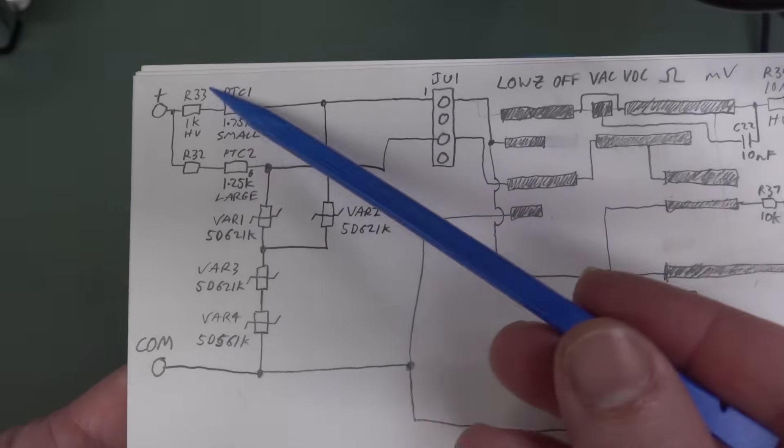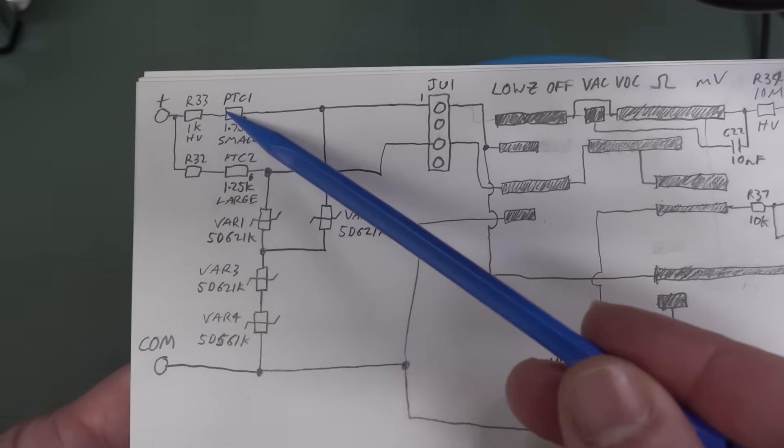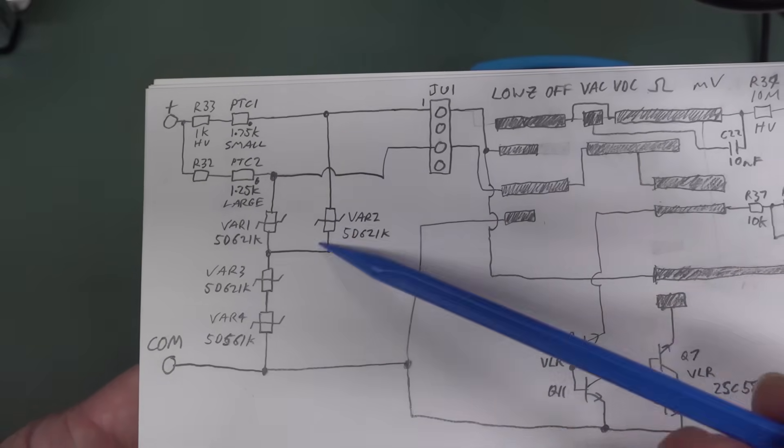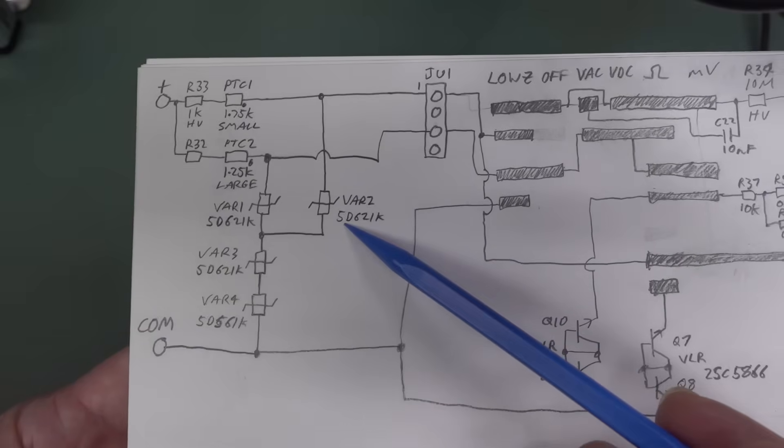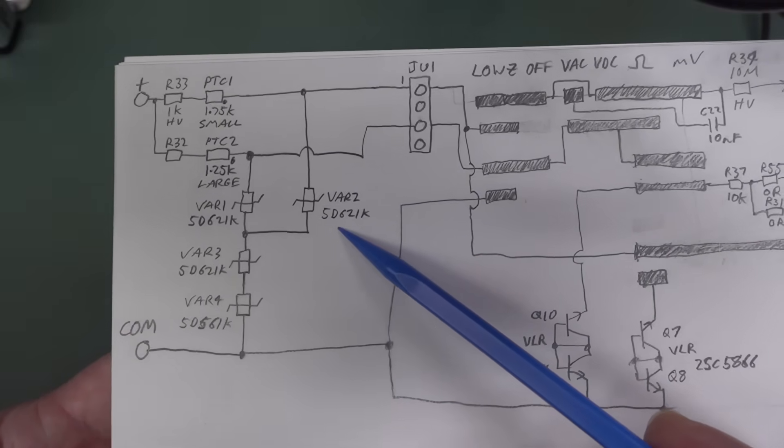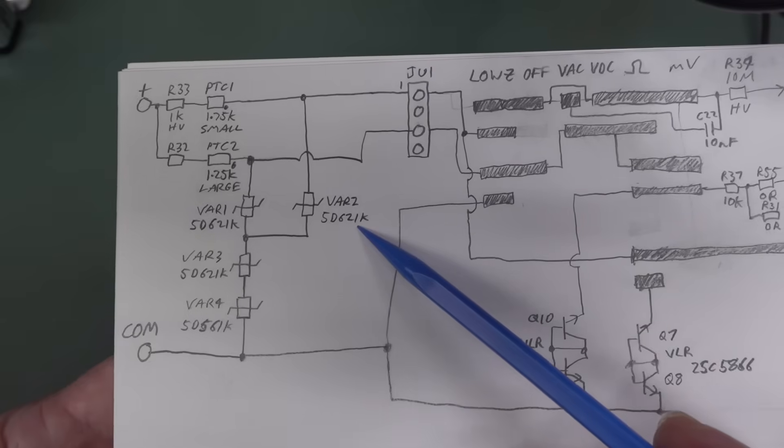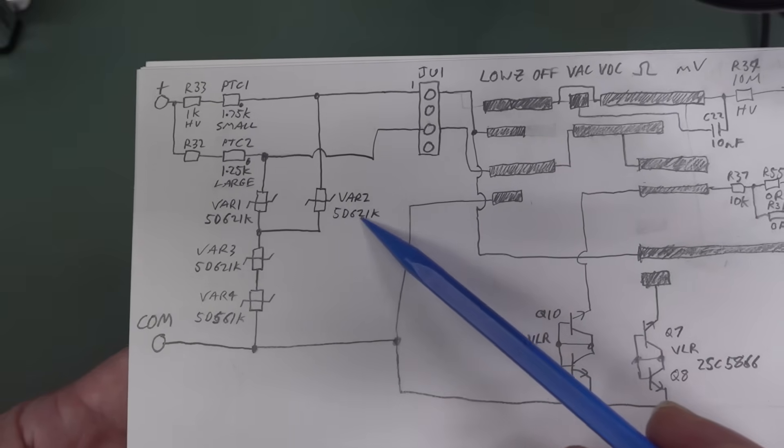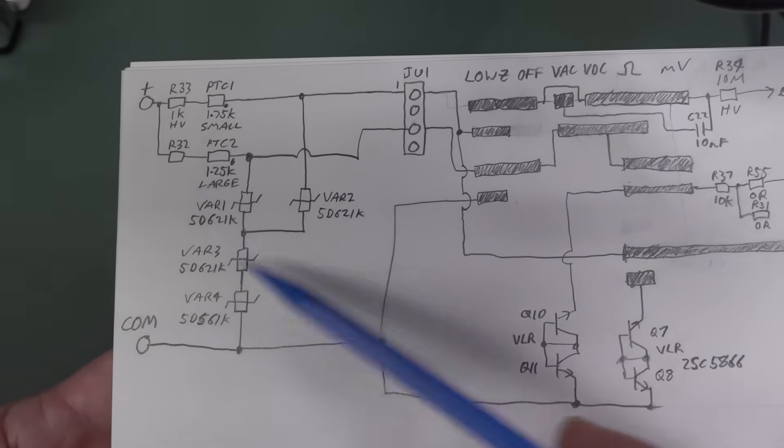So this is the input configuration here, and in voltage mode, we're basically using this path here, and we've got three MOVs in series like this. So these are a CNR brand Varista, or MOV as they're called, Metal Oxide Varistor. They're a 5D621K. So there's two of those in series.